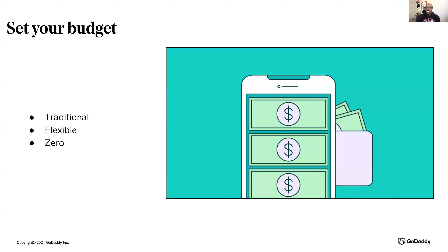A zero budget is when you start every category with zero at the beginning of each budget planning cycle. It sounds a little crazy, but you can actually increase amounts by justifying the cost every time. It gets you thinking: what can I do at the grassroots level with no money on my social media sites, and then build from there? There are many ways to manage a marketing budget — don't just think of it as one strict way.